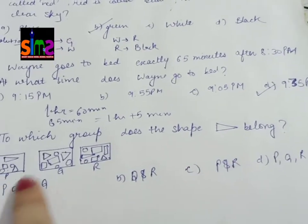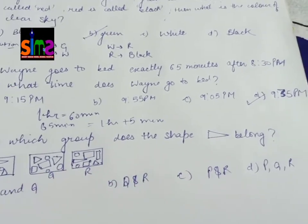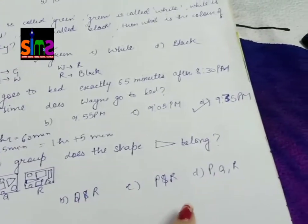Look, there are options: P and Q, Q and R, P and R, or P, Q, and R. Now note, first this is a shape.